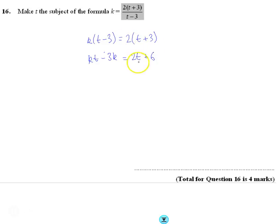I've expanded the brackets. Now I'm going to rearrange to get t expressions on the left and constants on the right, so kt - 2t = 3k + 6.